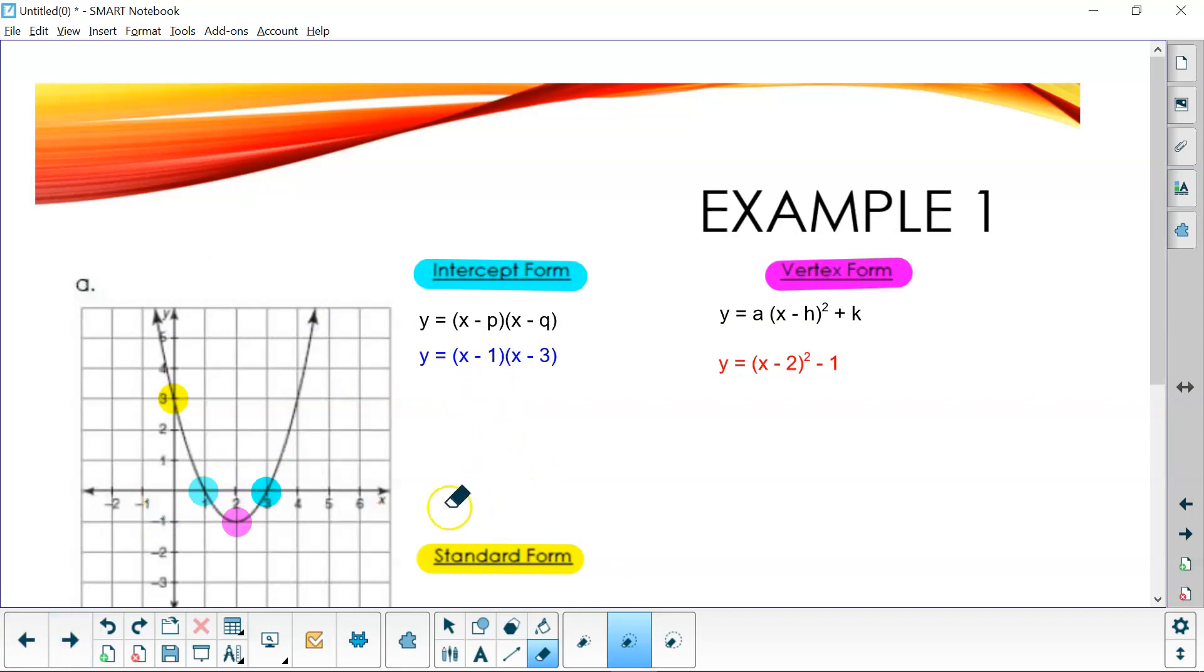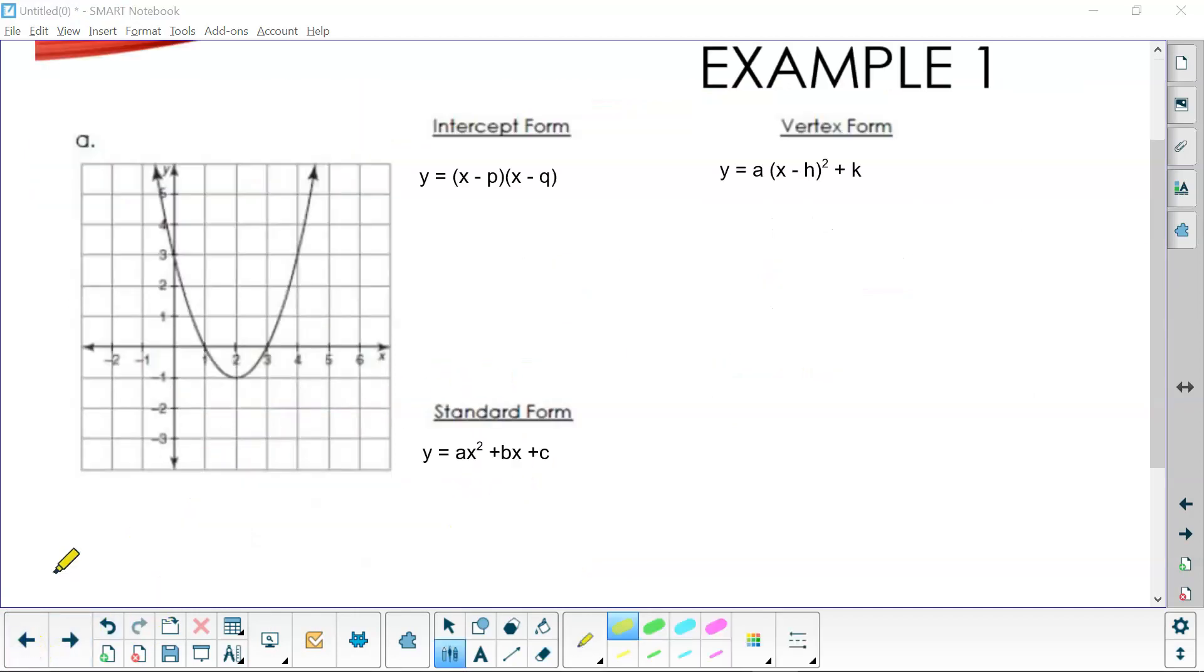Over here, I've already got on example one, we've got the intercept form or the factored form, the vertex form, and the standard form. And I've typed out each of these forms for you already. Let's just look at our graph and see where they go.